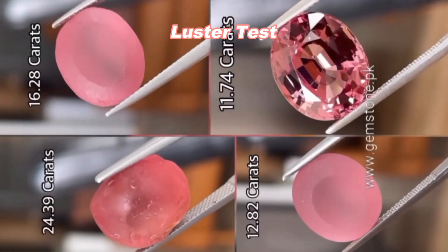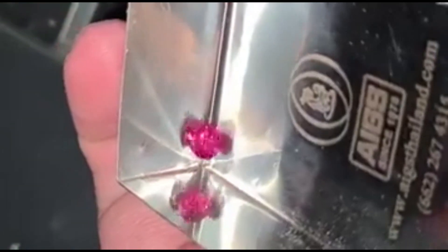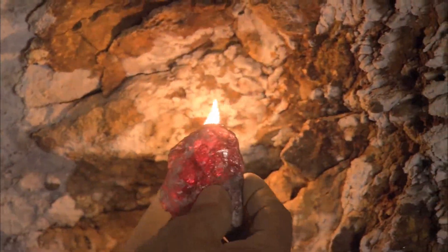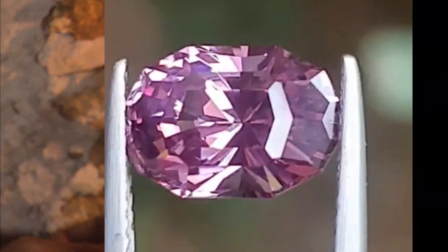Luster Test: Check the luster of the rough spinel. Spinel typically has a vitreous, glass-like luster. It should appear shiny and reflective when light is directed onto its surface.